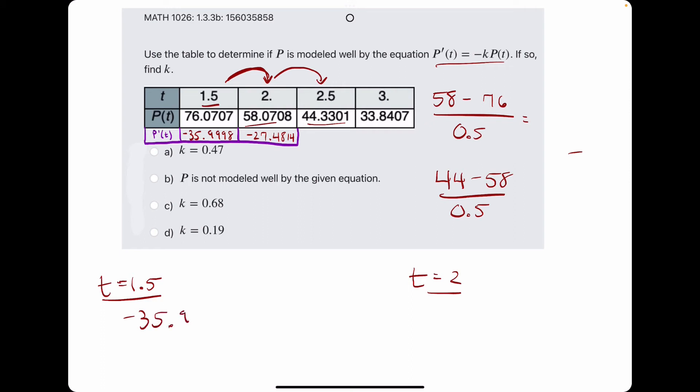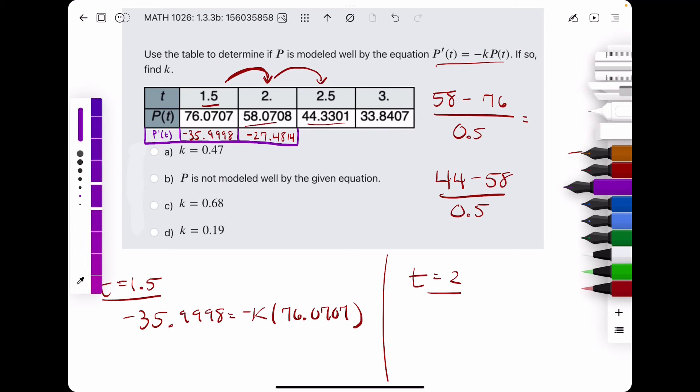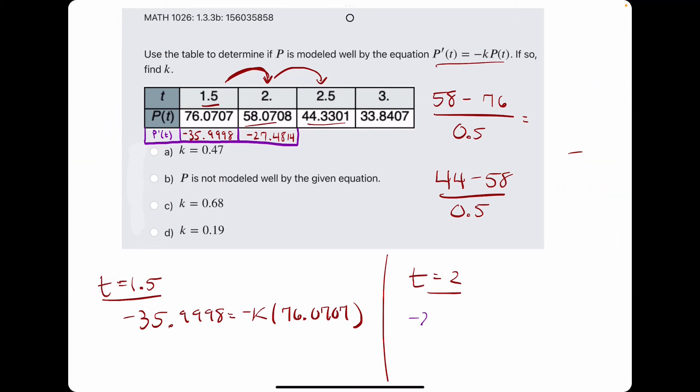we have negative 35.9998 equals negative k times p at 1.5, so 76.0707. I'll go ahead and set up the one for t equals 2. We have negative 27.4814 equals negative k times 58.0708.